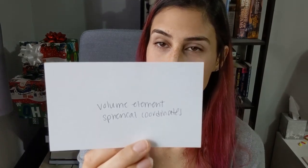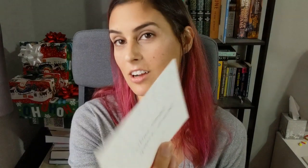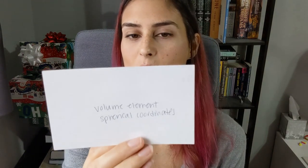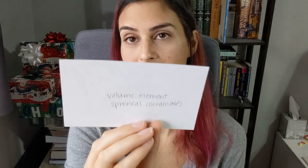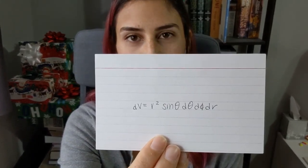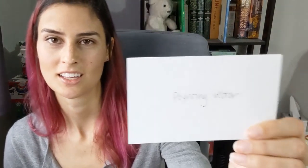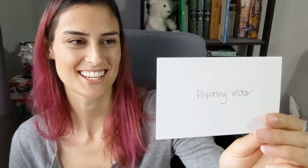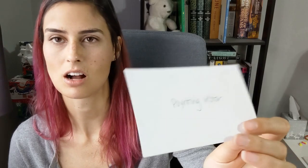The volume element in spherical coordinates: in Cartesian it would be dx dy dz, but in spherical coordinates dV equals r squared sine theta d-theta d-phi dr. The Poynting vector — named after a person, so 'Poynting' does not actually mean pointing, even though it kind of does — is S equals 1 over mu naught, E cross B.